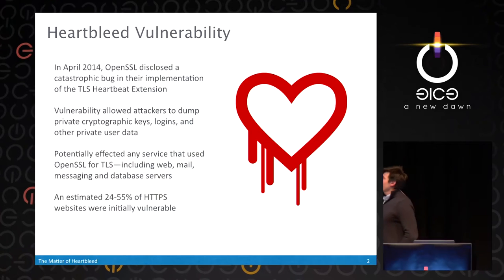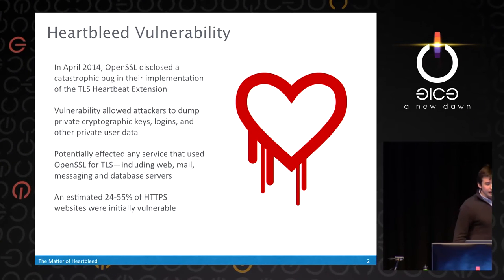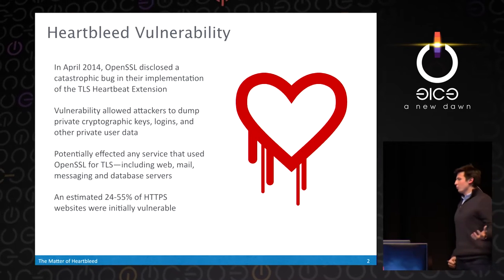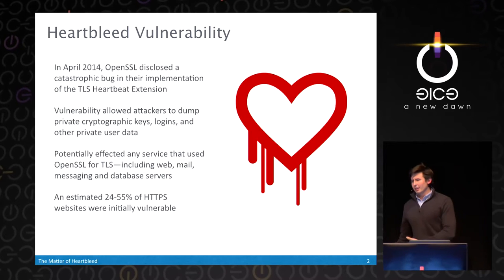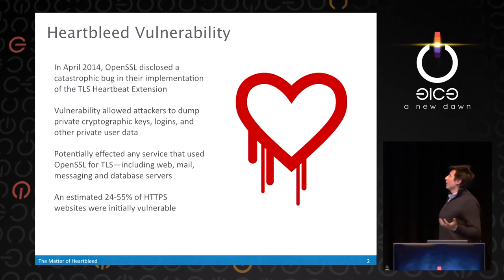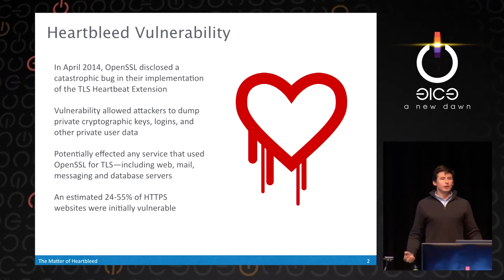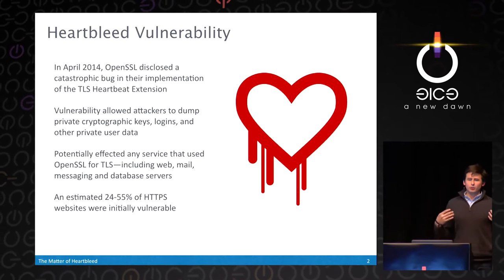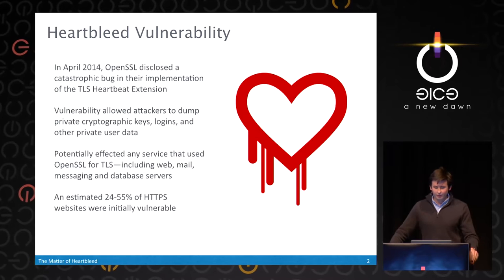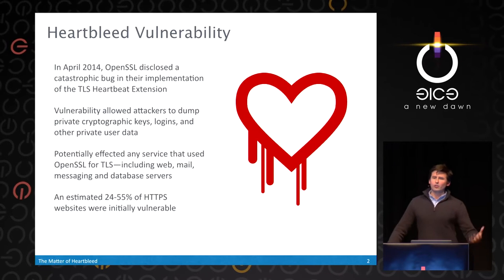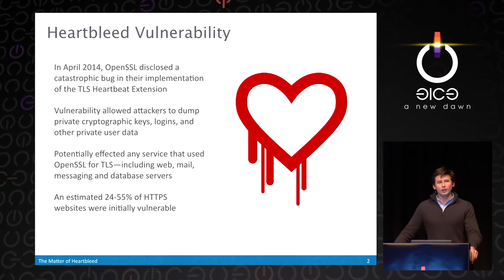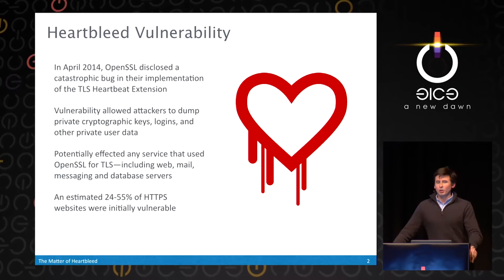In April 2014, OpenSSL disclosed a catastrophic bug in the implementation of the TLS Heartbeat extension. The vulnerability essentially affected every piece of software that used OpenSSL to facilitate TLS connections. This included everything from web servers — Nginx and Apache — but also affected Tor, the Bitcoin client, and a lot of other software. In the end, it allowed attackers to remotely steal any piece of information sitting in the SSL memory, including logins, credit card numbers, or cryptographic private keys. In our estimates, somewhere between 24 to 55 percent of all HTTPS websites were initially vulnerable.